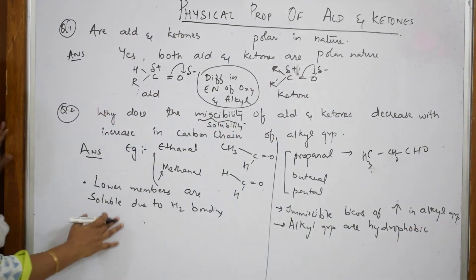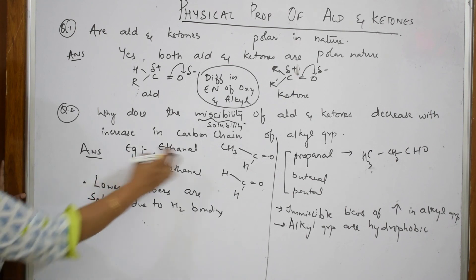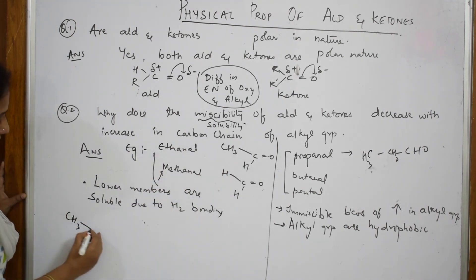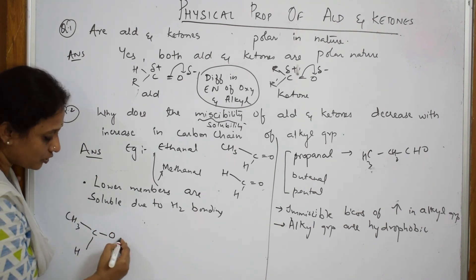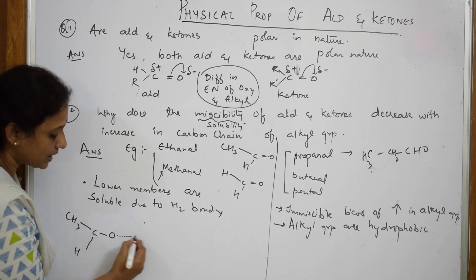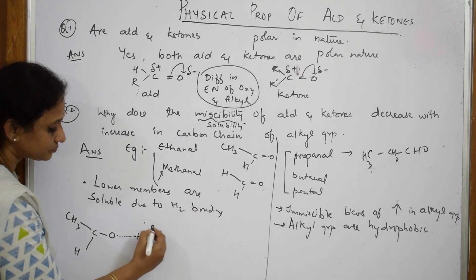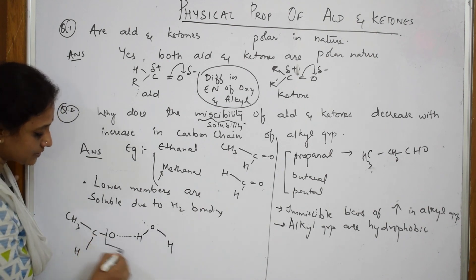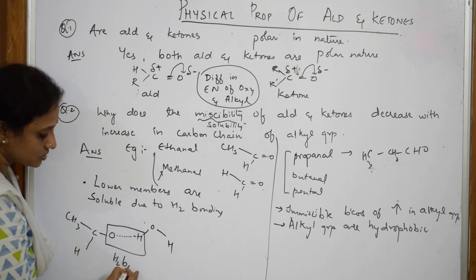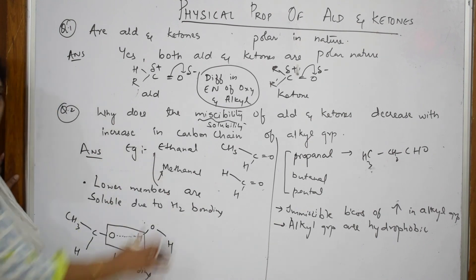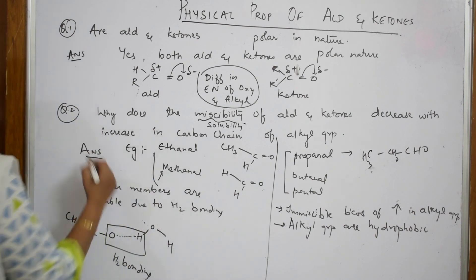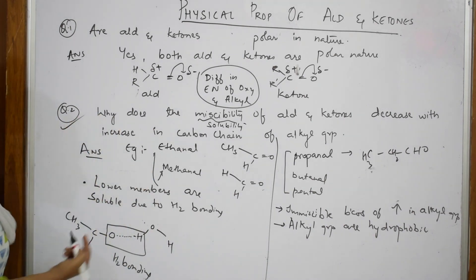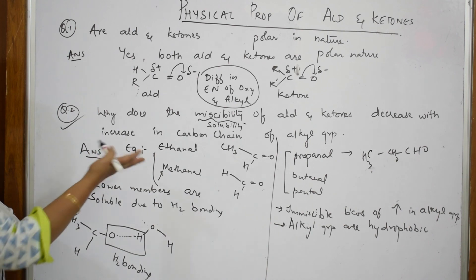To show hydrogen bonding: take acetaldehyde — the oxygen is electronegative, and it forms a hydrogen bond with a water molecule. Because of this hydrogen bonding, lower members are soluble in water. Because of the presence of bulky alkyl groups, higher members are insoluble in water. This is how you justify the answer. Please note the format and try to put it this way.